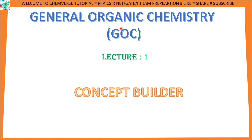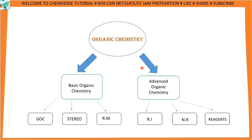Welcome to this canvas tutorial. Today we are going to start our first lecture on General Organic Chemistry, that is the GOC. This is lecture number one, which is a concept builder. We will learn some very important elementary concepts. Organic chemistry is broadly categorized into two parts: basic organic chemistry and advanced organic chemistry. In the basic part, general organic chemistry, stereochemistry, and reaction mechanism are present.